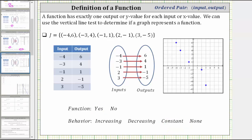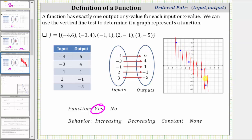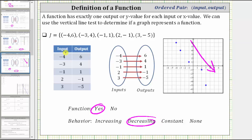For the last example, we have set J listed horizontally and vertically. In the mapping, we have five different inputs and five different outputs, and every input has exactly one output — so we do have a function. The graph of the five ordered pairs passes the vertical line test since a vertical line never intersects the graph in more than one point. Notice the graph goes downhill from left to right, so we have a decreasing function — as the inputs increase, the outputs decrease. I hope you found this helpful.